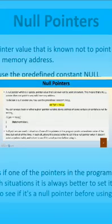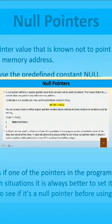First we are going to start with the null pointer. What is the null pointer? From the name, null means nothing. So this pointer points nowhere. This null pointer does not have any valid memory address. The declaration of this null pointer — if you say ptr is a null pointer — then: int* ptr = NULL. This is the procedure.